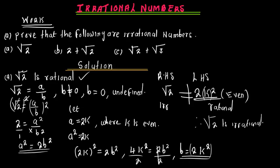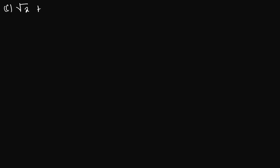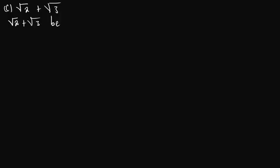The third question: prove that root of 2 plus root of 3 is irrational. Same method — contradiction method. We let root of 2 plus root of 3 be rational. If that is true, it can be expressed in the form a over b, so root of 2 plus root of 3 equals a over b.